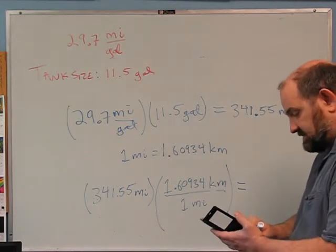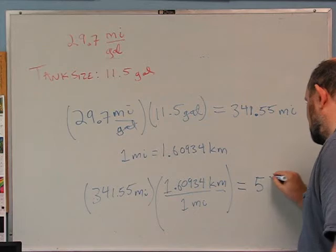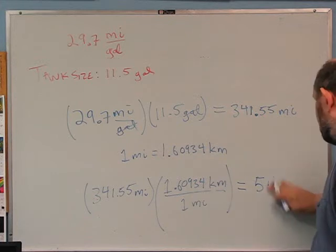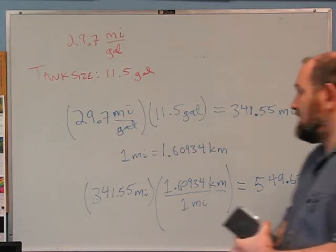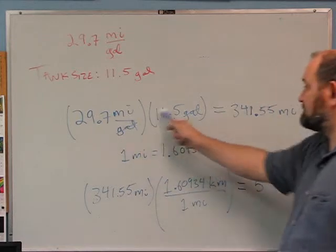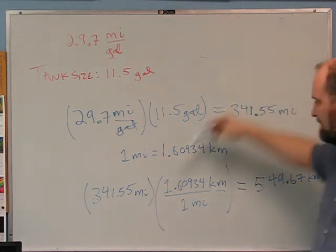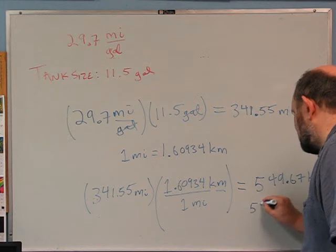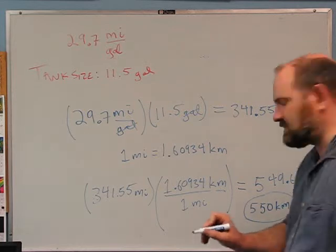The thing in parentheses is equal to 1, because 1.60934 kilometers is equal to 1 mile — when you divide something by something it is equal to, that quotient is 1. So I'm multiplying by 1, so it won't change the answer, but it'll give me a different number with different units. So if I multiply this by 1.60934, I get 549.67 kilometers.